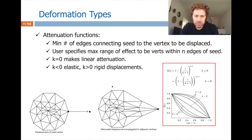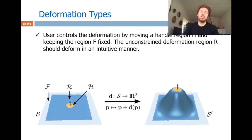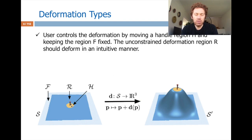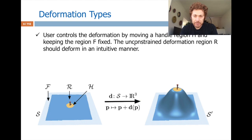This is one way to propagate the deformation — a very simple way. The deformation types are: a fixed region that will never be updated (frozen vertices), a handle region H that the user will move, and an unconstrained deformation region R that should deform intuitively. That propagation should handle the blue parts automatically.